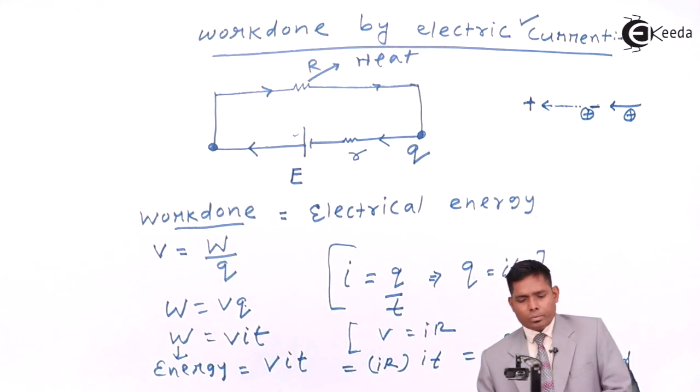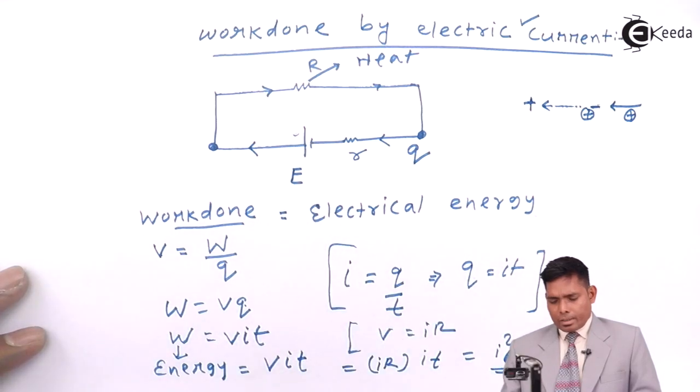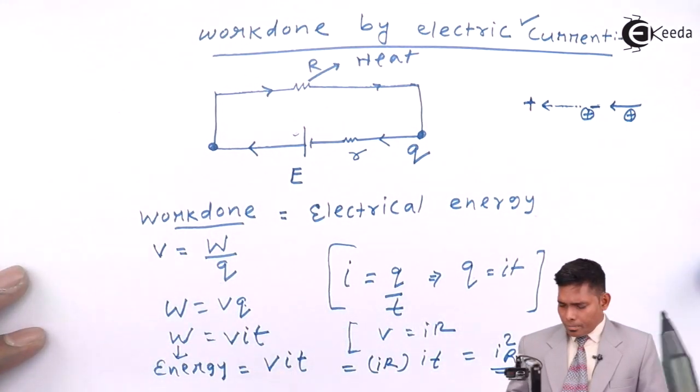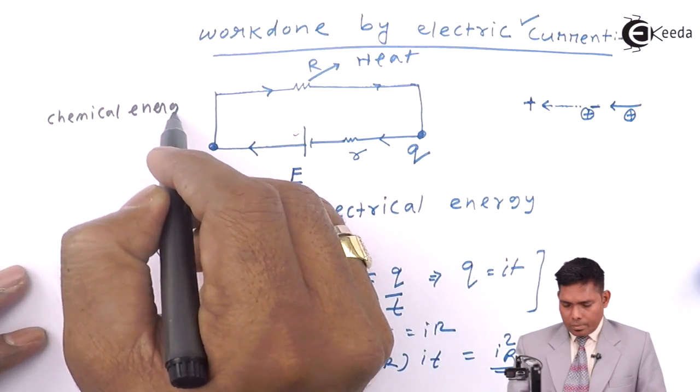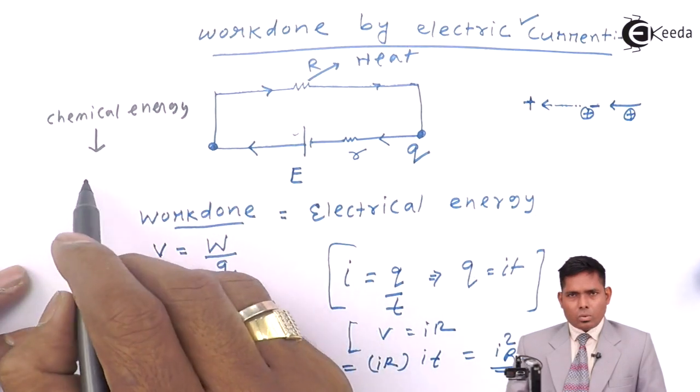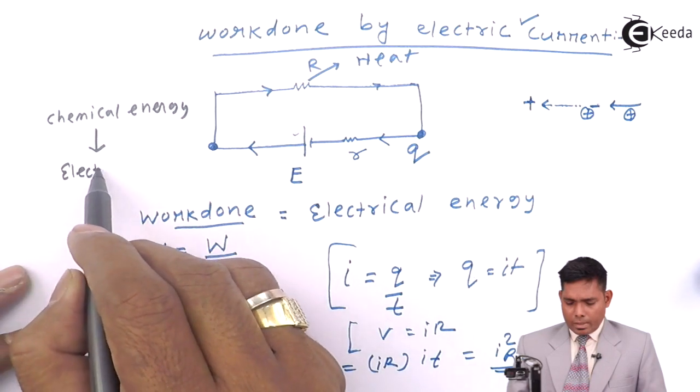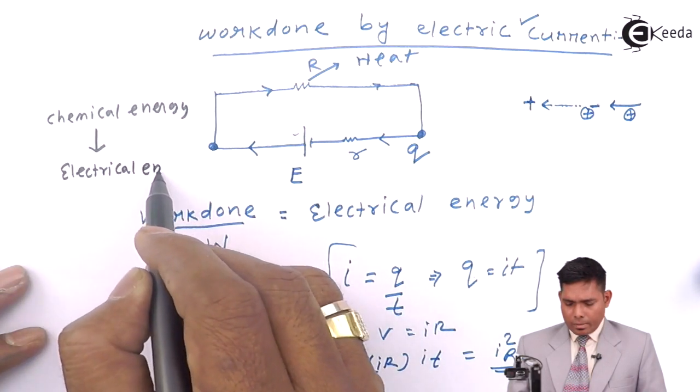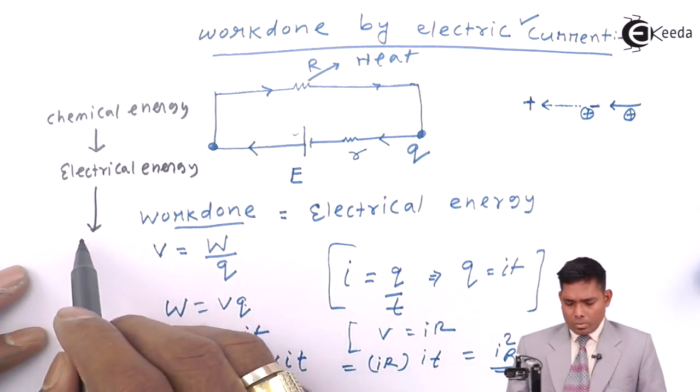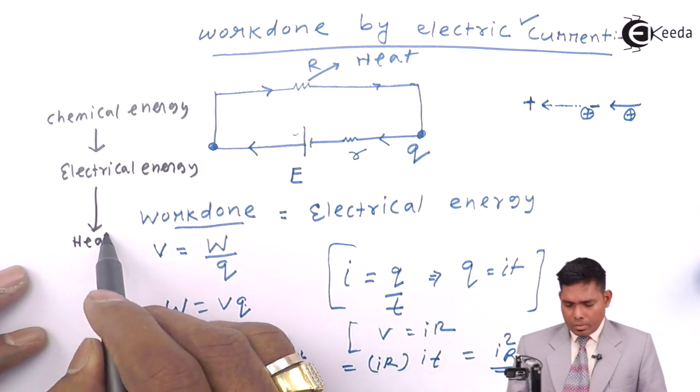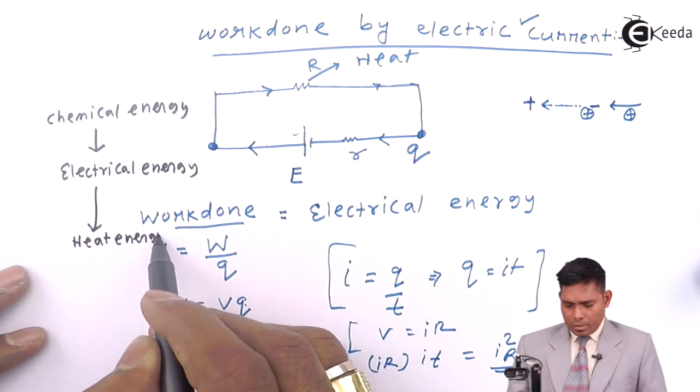The electrical energy produces or appears in the form of heat in the resistor. The chemical energy in the battery is converted to electrical energy, then electrical energy is converted to heat energy.